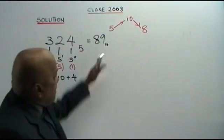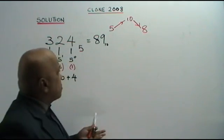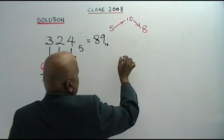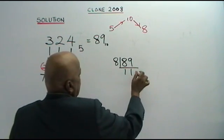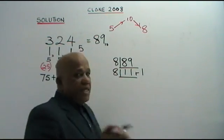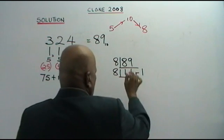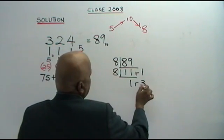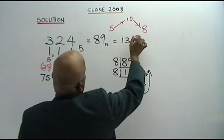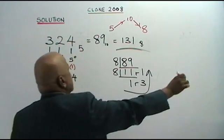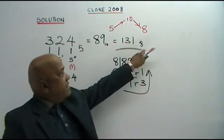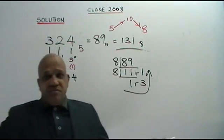Now we convert from base 10 to base 8. You divide 89 by 8: 11 remainder 1. Divide by 8 again. You must divide until you get a digit less than 8. 1, remainder 3. So this is your answer: 1, 3, 1 in base 8. So 3, 2, 4 base 5 equals 1, 3, 1 in base 8.